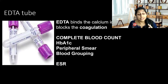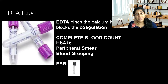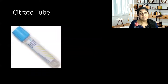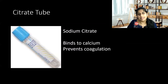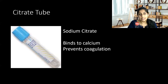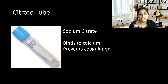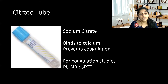For ESR, we also have a separate tube — a black colored tube — which can also be used exclusively for ESR measuring. Now we have the citrate tube. This citrate tube mainly has sodium citrate. It again, like EDTA, binds to the calcium. The difference between using EDTA and a citrate tube is that this is a reversible process — whatever calcium is bound in the citrate tube, it's reversible by adding calcium back. Here also we prevent coagulation, and this tube is mainly used for coagulation studies like PT-INR and APTT.